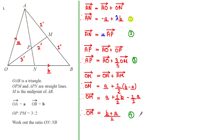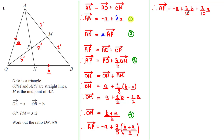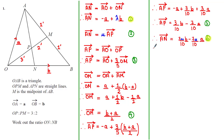Now that we have OM in terms of a and b, we substitute into the expression for AP: AP = −a + (3/5)·((a + b)/2). Expanding the brackets gives AP = −a + (3/10)b + (3/10)a. Collecting like a terms gives AP = (3/10)b − (7/10)a. Substituting into AN = μ·AP gives AN = (3μ/10)b − (7μ/10)a, which we label as equation 6.